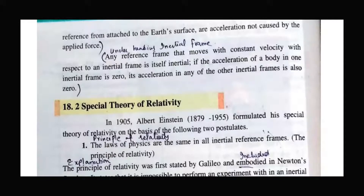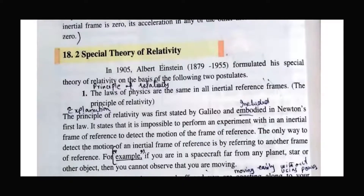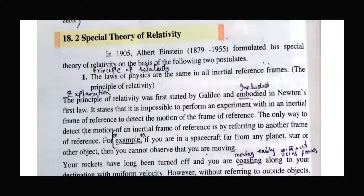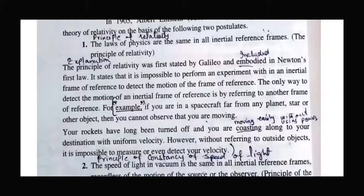The topic of frame of reference is very simple. You have to understand that with a change in condition, your observations change. You have two kinds: inertial frame of reference and non-inertial. Now let's start our next important topic: the special theory of relativity. In 1905, Einstein formulated the special theory of relativity and gave two postulates. The first one is the principle of relativity — all laws of physics are valid in all inertial frames of reference.